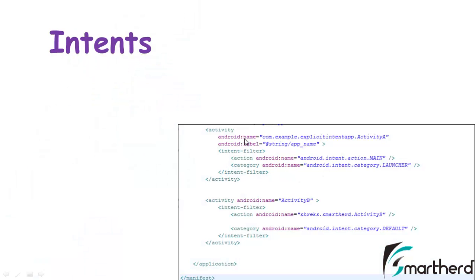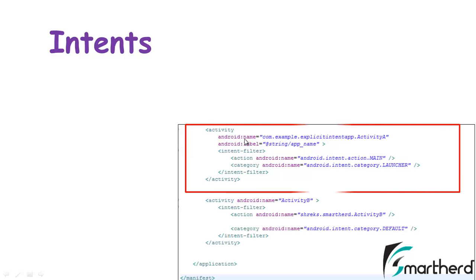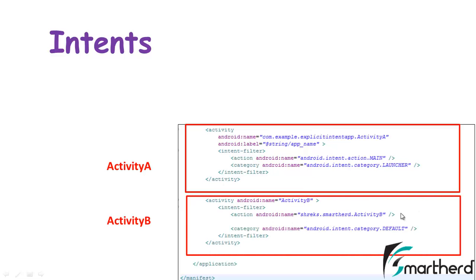We have seen our manifest file when we made our first application. Inside our manifest we had this intent filter. This first activity represented the main activity. Here I am presenting activity A inside our manifest file with the following code. In this application I am also having another activity B, and this is the code of activity B in our manifest file.